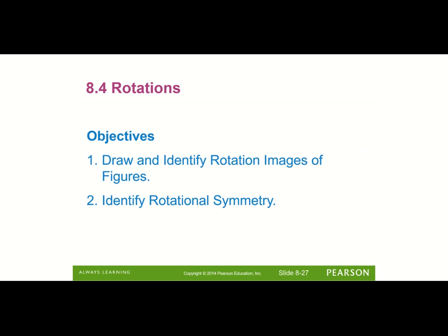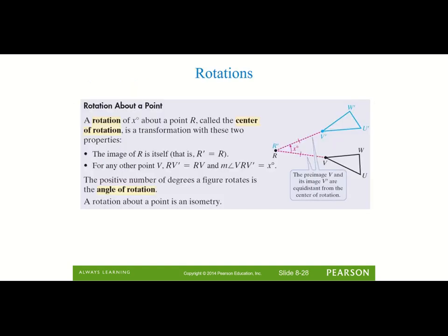This is the last section — section 8-4 — and we're going to talk about rotations. A rotation about a point means we identify a center point and rotate around it by a named number of degrees. That point serves as the vertex for the angle of rotation and is the center of the rotation. A rotation does not change the size or shape of the figure — it just rotates it about the center of rotation.